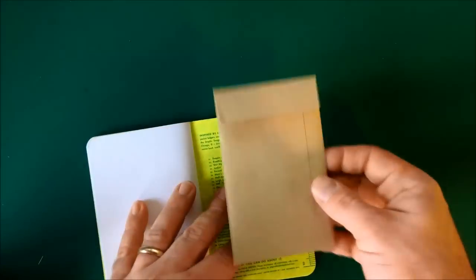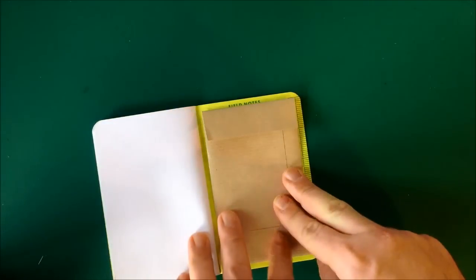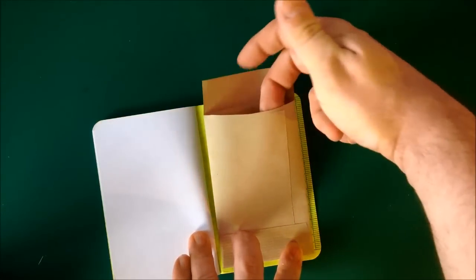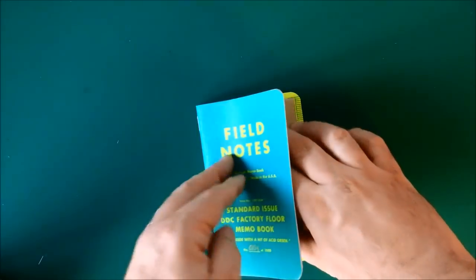Turning it over so the back faces you, with a little bit of glue or tape you could stick it there in the back of your Field Notes booklet. And all of a sudden you've got a handy little envelope for storing receipts, tickets and what have you.